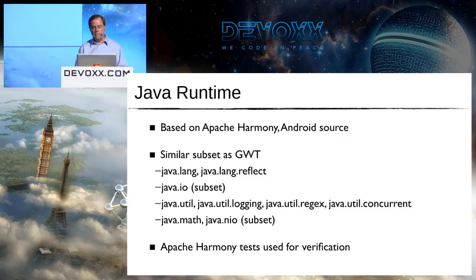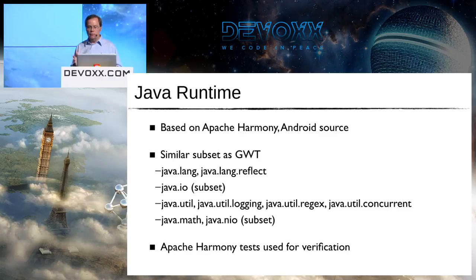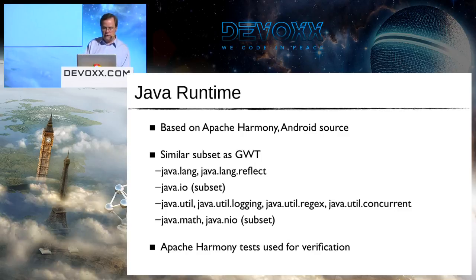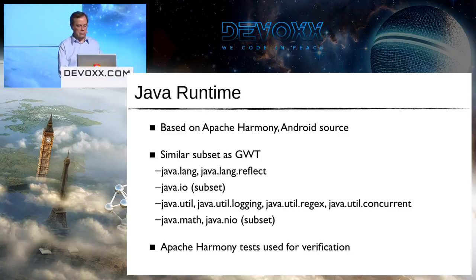We have a Java runtime based on Apache Harmony and Android source - we can mix them because Android is based on Apache Harmony. Apache Harmony is a clean room implementation of the Java Runtime environment, and it includes a lot of tests. For J2ObjC, we have a subset similar to GWT, including lang, IO, and a lot of the util packages. We use these tests for verification, which gives us confidence in the JRE that a new project normally wouldn't justify.